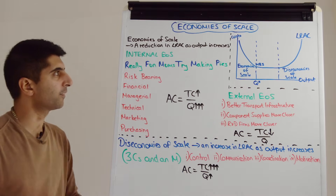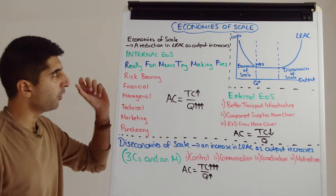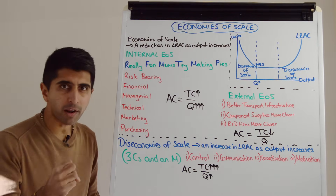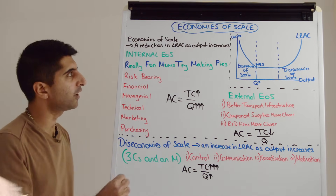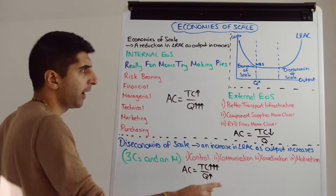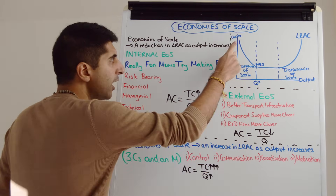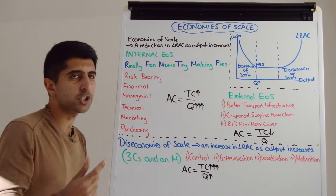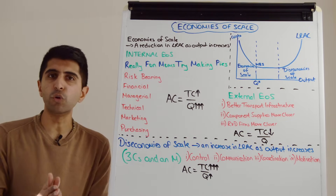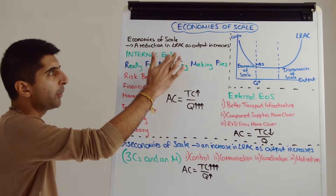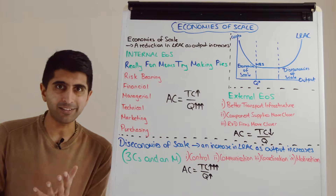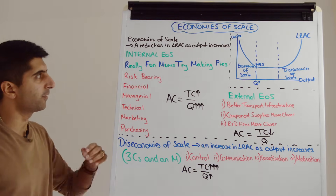Let's start with economies of scale. Economies of scale is simply a reduction in long-run average cost as output increases and we can see that clearly from our diagram. As output is increasing, long-run average cost is decreasing. There are two different groups of economies of scale: we can have internal economies of scale and we can have external economies of scale.